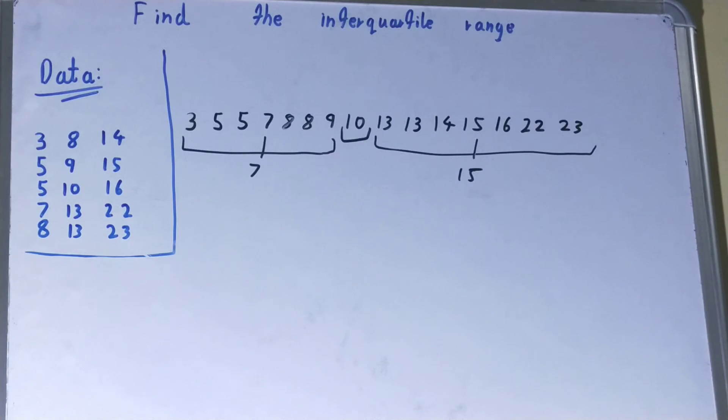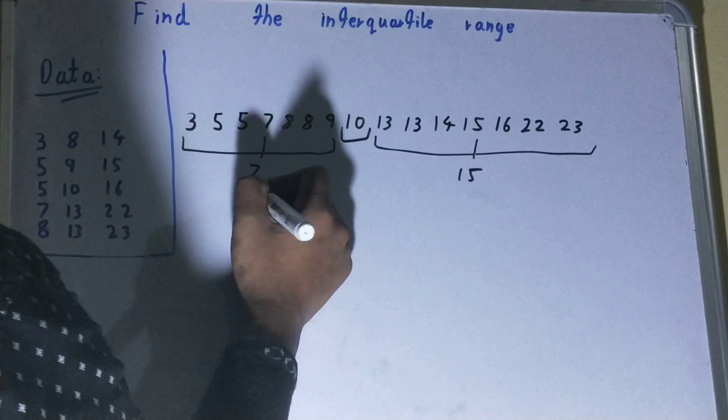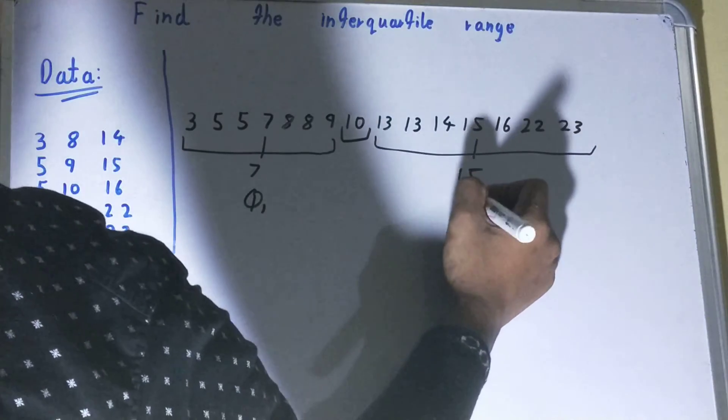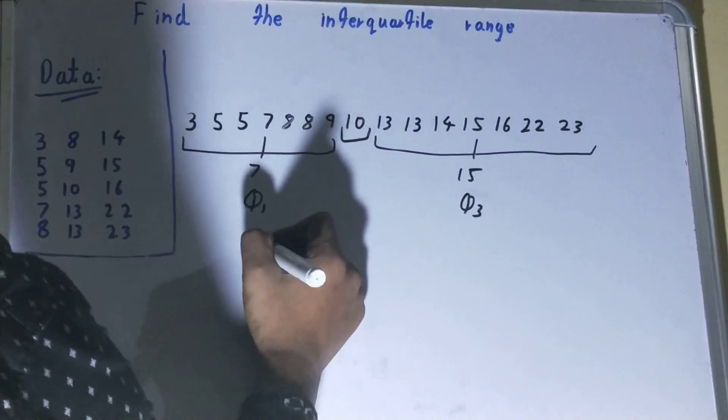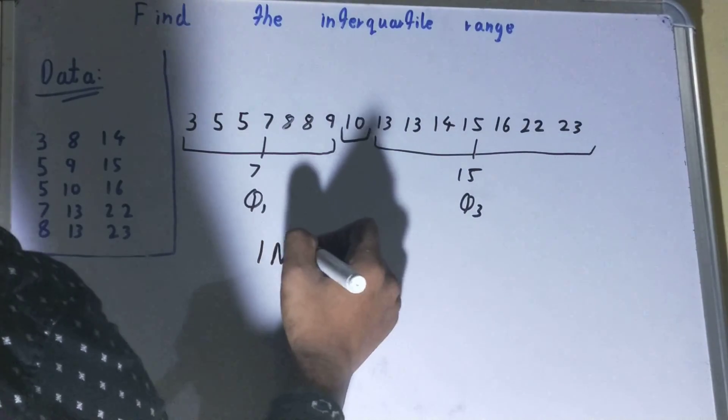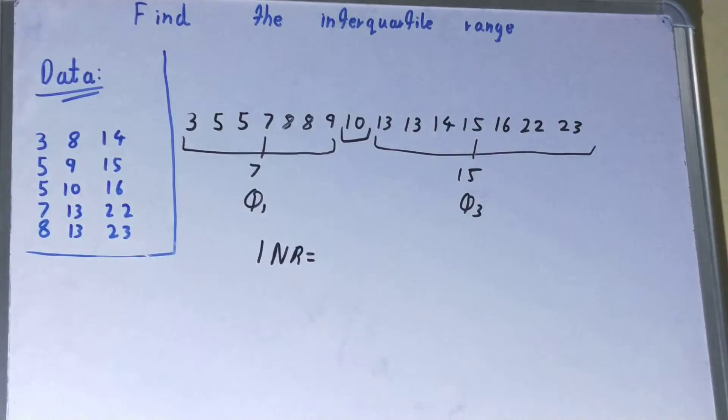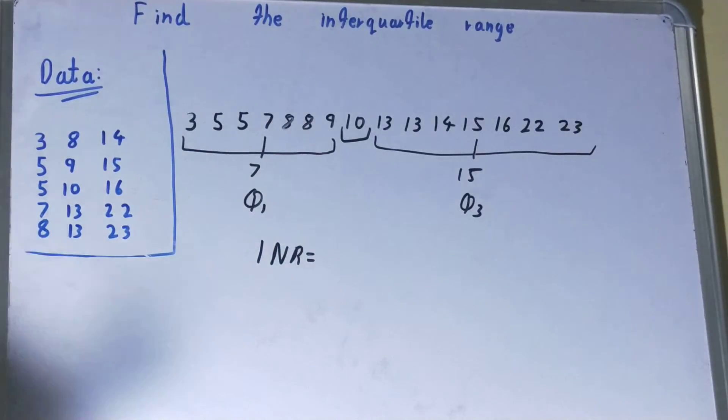In some books it is written as Q1 and Q3, so you don't need to get confused. The process for calculating interquartile range is subtracting the lower half mean from upper half mean, that is Q3 minus Q1.